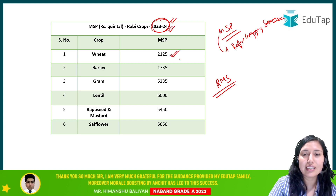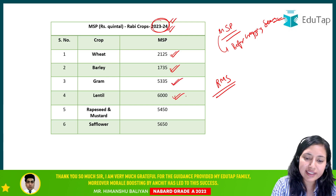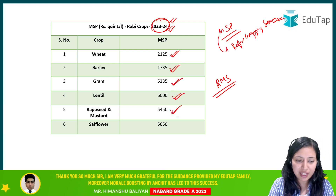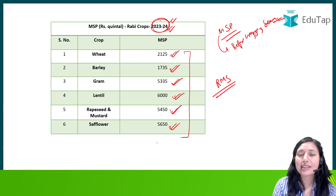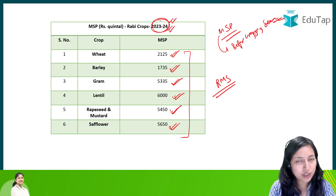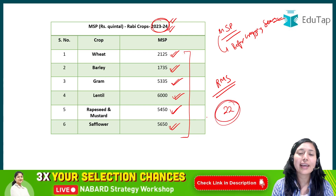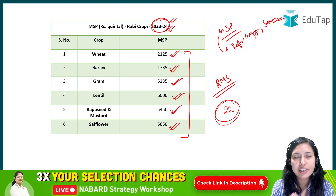For Rabi season crops, wheat is ₹2,125, barley is ₹1,735, gram is ₹5,335, lentil is ₹3,000, rapeseed/mustard is ₹5,450, and safflower is ₹5,650. These are the present MSP values for Rabi season crops. Since there are only 22 crops in total, it is recommended that you memorize these data points and know the present MSP for each particular crop, as questions will definitely come from this topic.